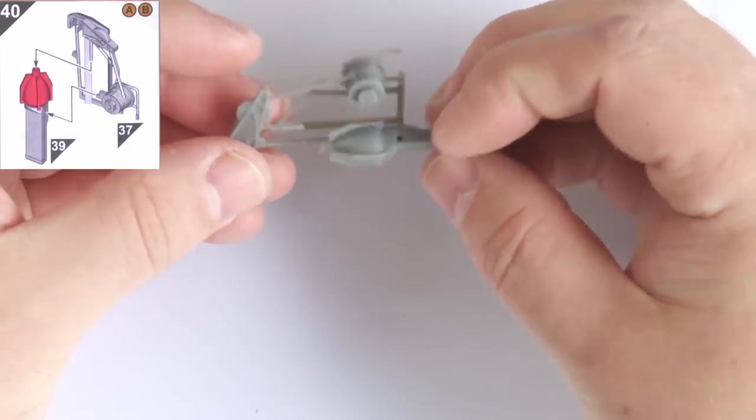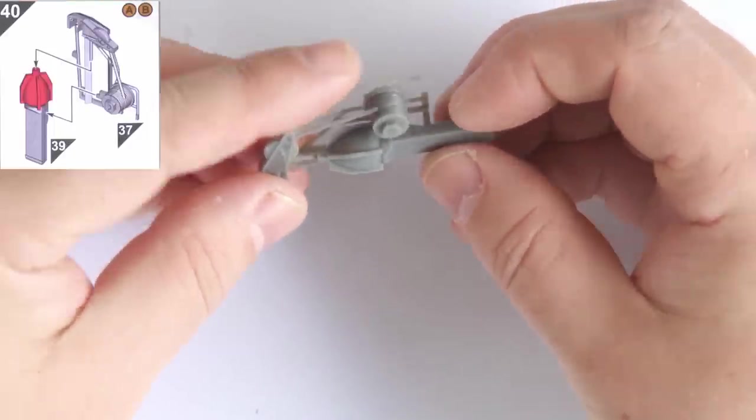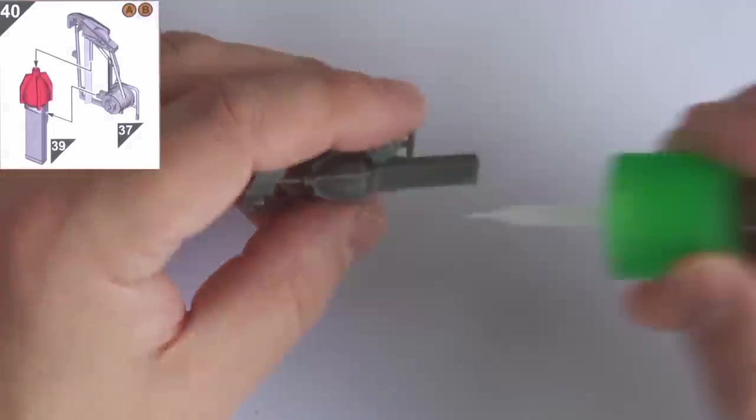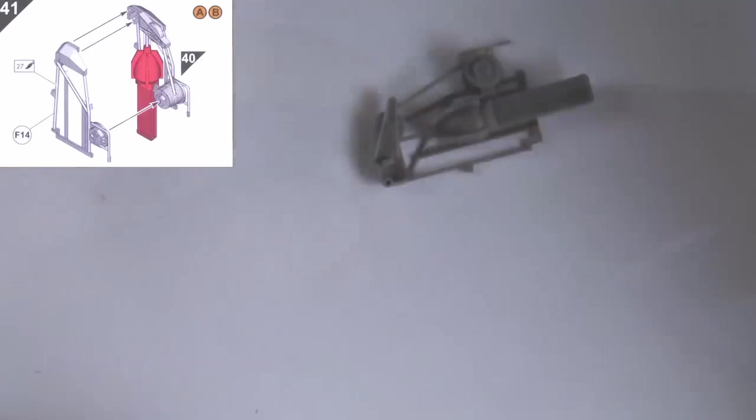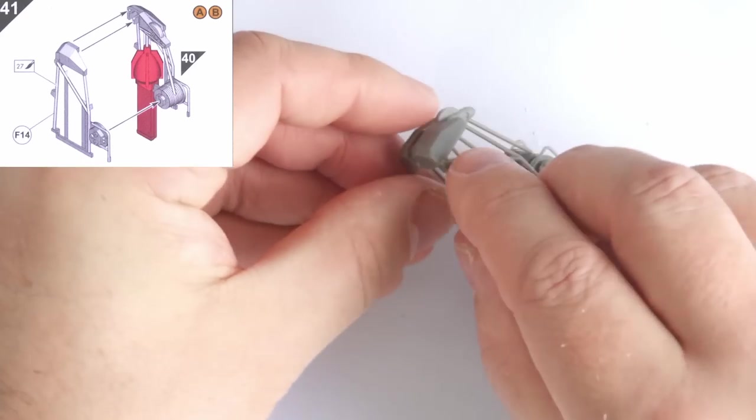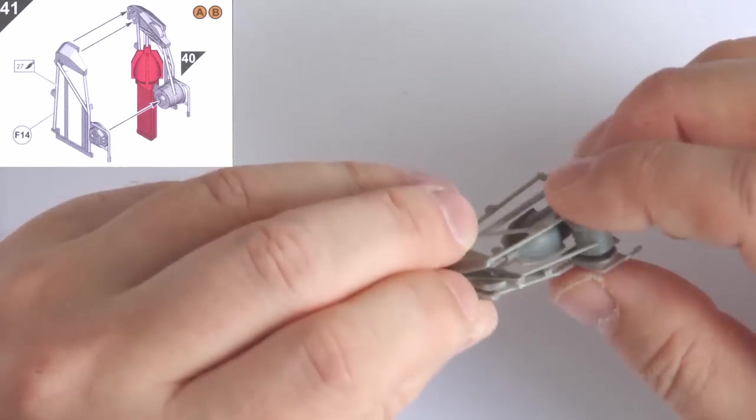What I would do differently were I to build this again, however, would be to paint some of these pieces before assembly. Painting the sonar probe inside its winch assembly was unnecessarily difficult, but that was my fault and not one of the kit. At least I'm making these mistakes so you don't have to.